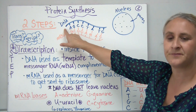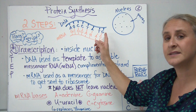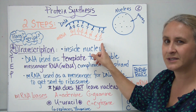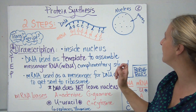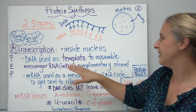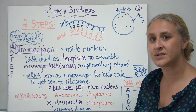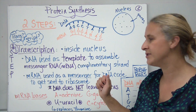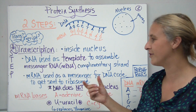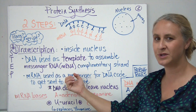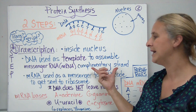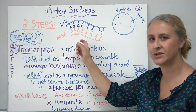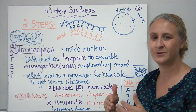The picture here shows a segment of DNA — you can see the A's, T's, C's, and G's. We can recognize the DNA because it has a T. On one side of the picture we can see a strand of mRNA, which we'll talk about in a minute. This first step of transcription happens inside the nucleus. The DNA is used as a template to assemble and build something called messenger RNA, abbreviated as mRNA, and it's called a complementary strand.